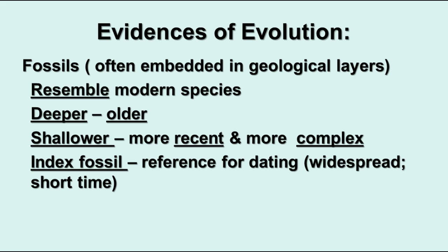First of all, fossils. Fossils are often embedded in geological layers. You'll find things in the fossils that resemble modern species. As you dig down into the rock layers, the deeper rock layers are going to be older and the shallower ones more recent. As you look at fossils in different layers, you'll see that the ones closer to the surface are more complex than those farther down. There are also index fossils used as references for dating — fossils of organisms that were widespread but lived for a relatively short geologic time, so wherever you find them you know the relative age of the rocks.